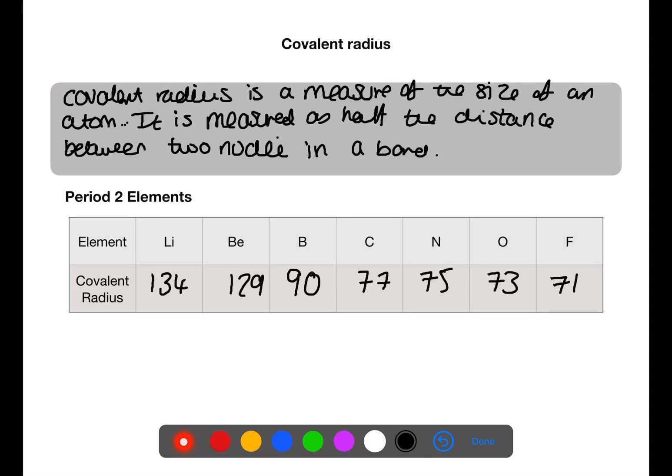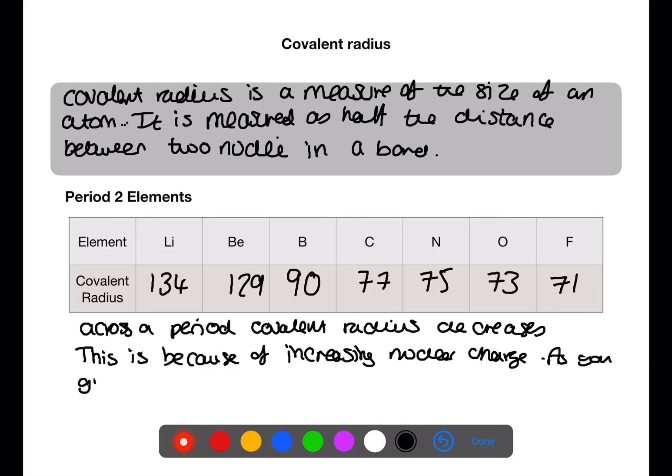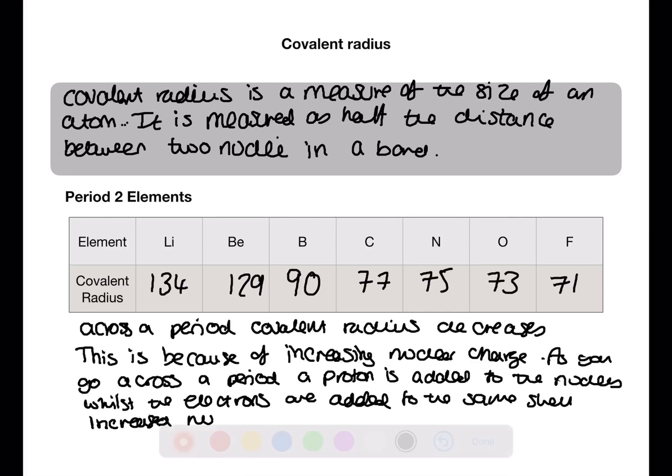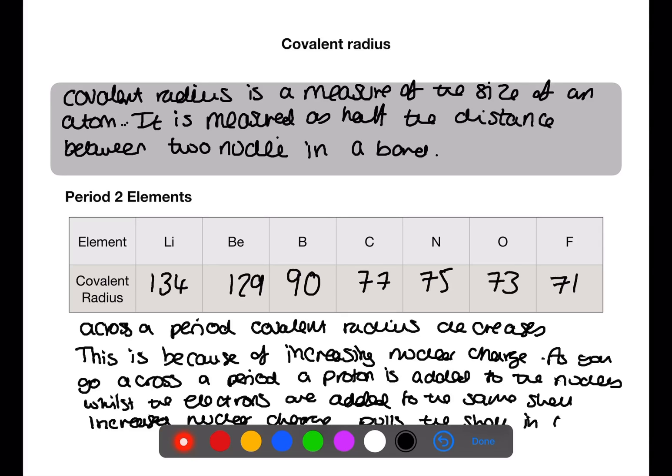What general trend can we see happening here? As you move from left to right across the period, the covalent radius decreases. Why is this? This is because of increasing nuclear charge. As you go across a period, a proton is added to the nucleus, whilst the electrons are added into the same shell. The increased nuclear charge within the nucleus pulls that shell in tighter.